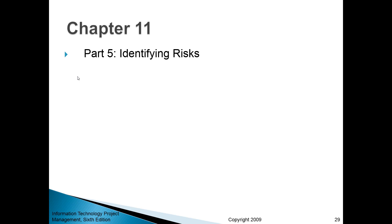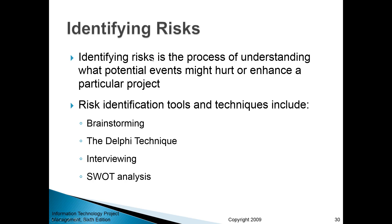Part 5 of Chapter 11 deals with identifying risks. Identifying risks is the process of understanding what potential events might hurt or enhance a particular project. Some of the risk identification tools and techniques include group brainstorming or thinking techniques such as brainstorming, the Delphi technique, interviewing, and SWOT analysis. We will talk about each of those popular techniques in more detail in a few minutes.